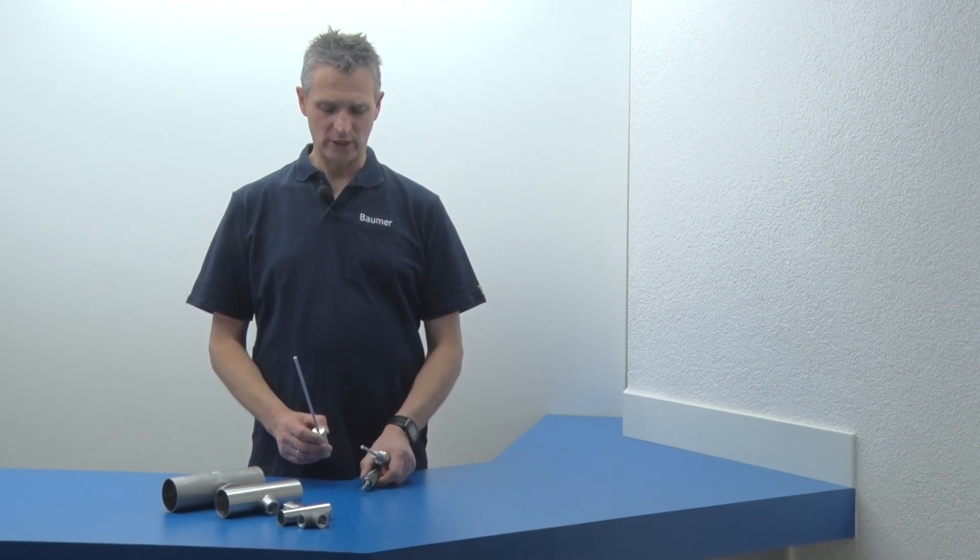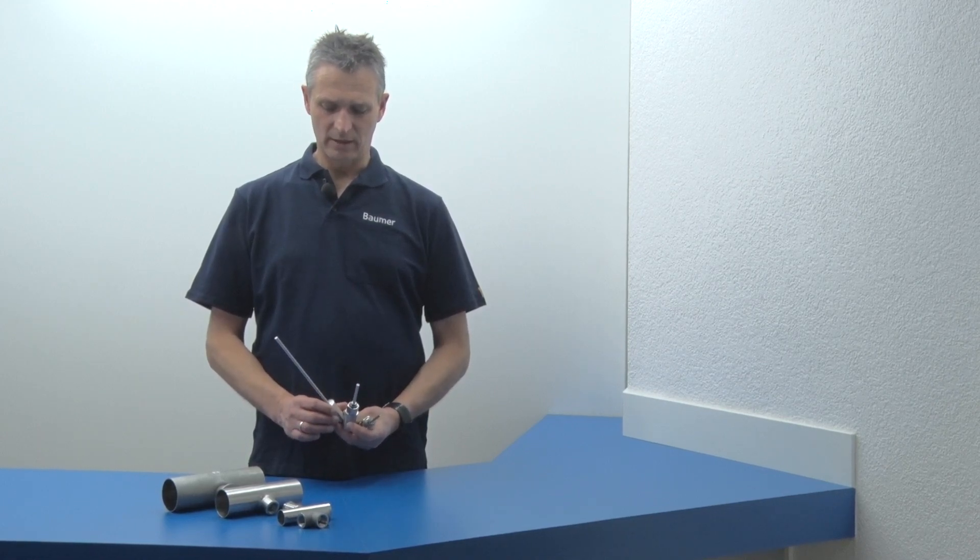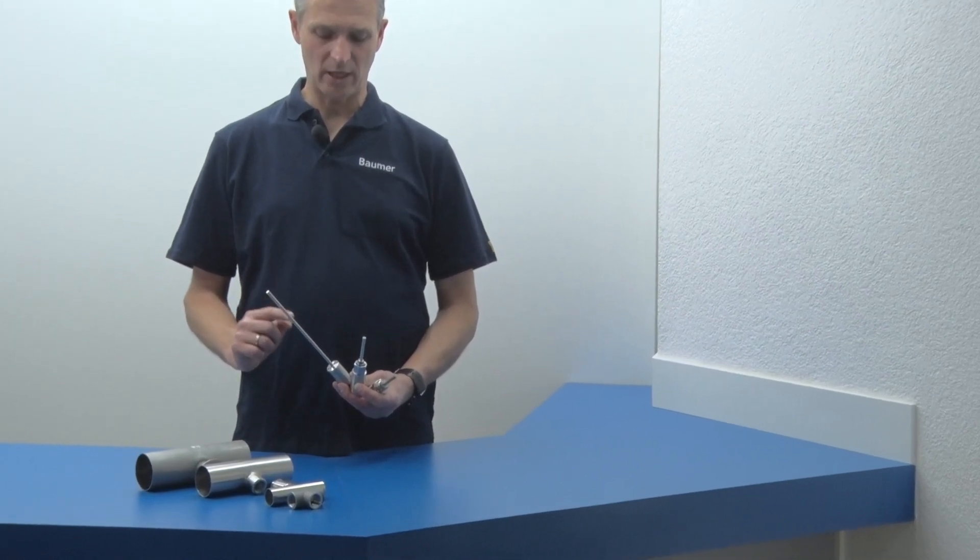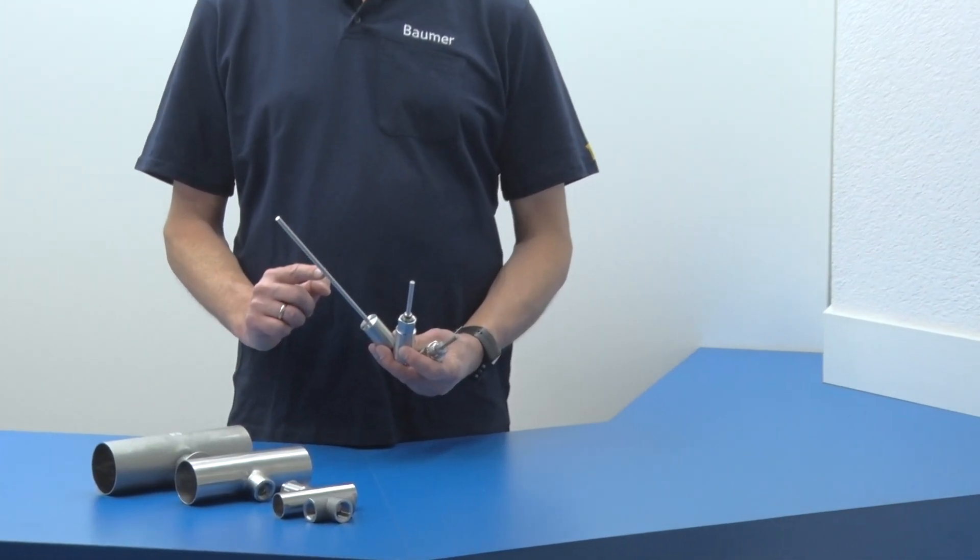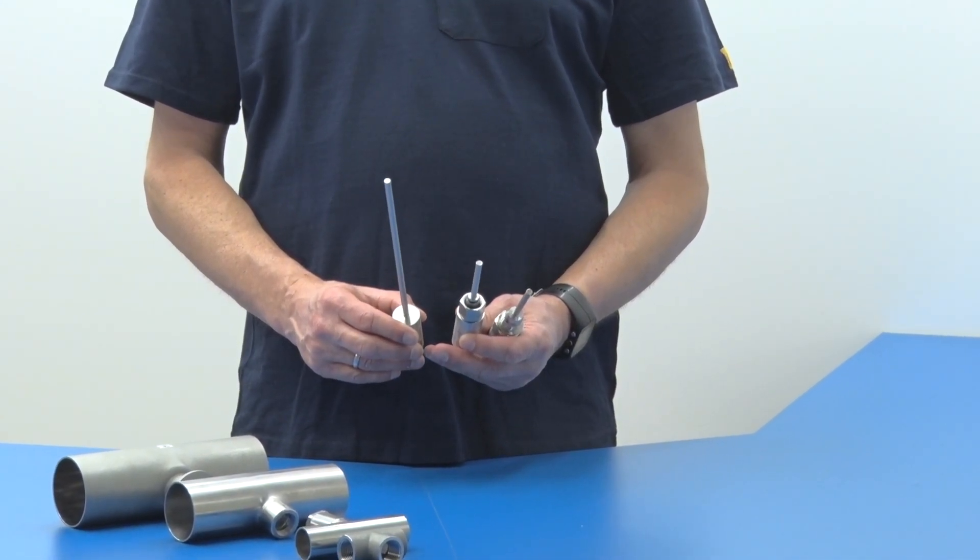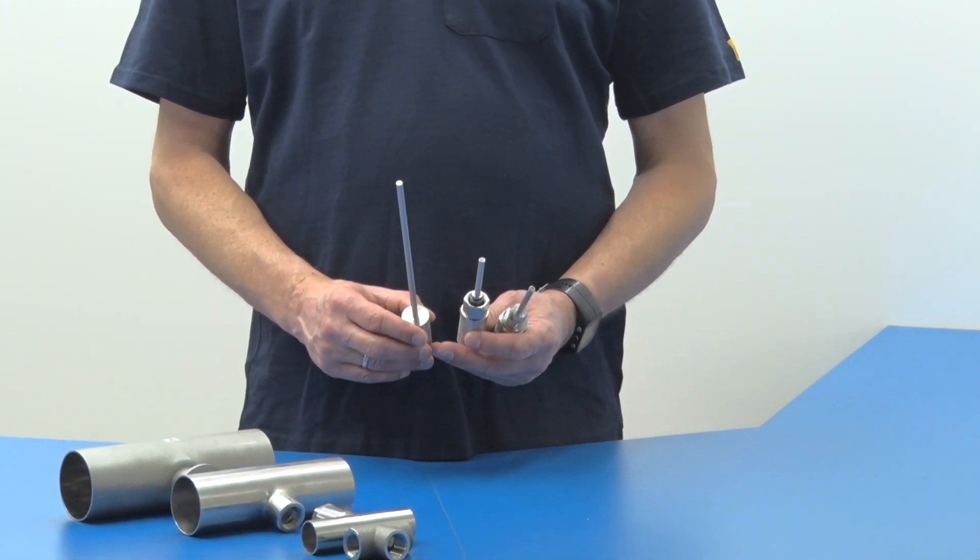The industrial sensors are available in three different variants and process connections. First, the variant for sliding connection with rod lengths 200 and 100 mm. It ensures optimal position of the sensor tip in different pipe cross-sections.